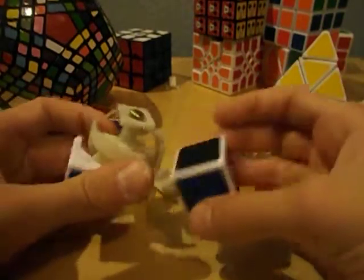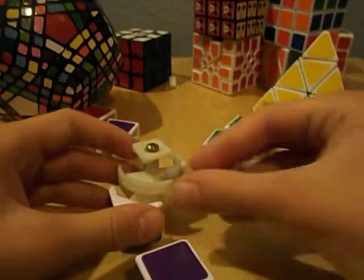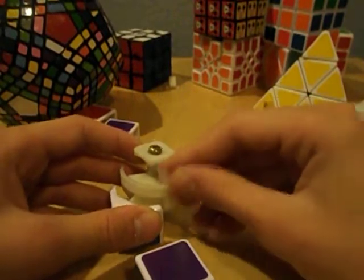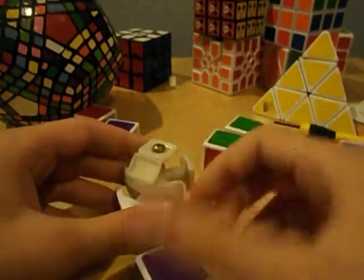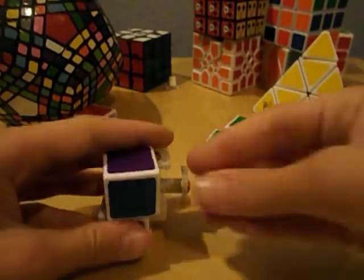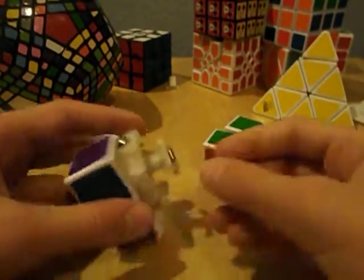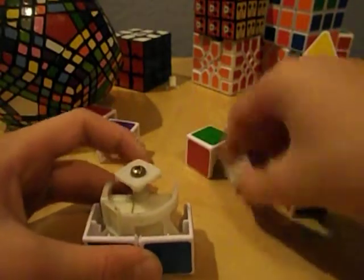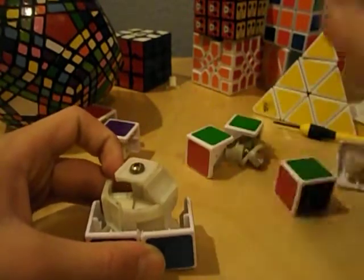Now for the reassembly, we're going to do it just like a 3x3. Take an edge, put it in, and remember we have to make sure this is solved. Put the corner in, put this in, and now do it on this side as well. Remember to make sure it's solved.